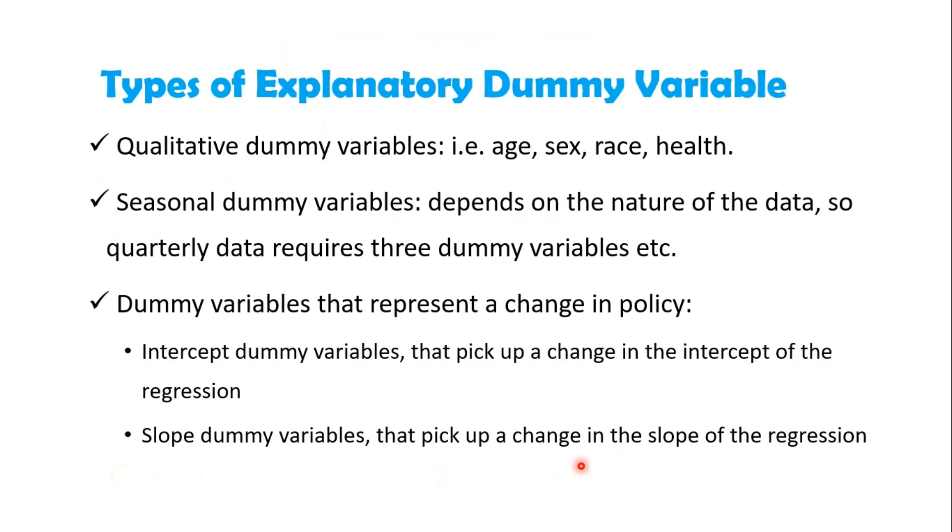There are different classifications or types of dummy variables as explanatory variables. The first is qualitative dummy variables, such as age, sex, race, or health. The second is seasonal dummy variables, which depend on the nature of data. For quarterly data, this requires three dummy variables. The third type represents a change in policy.